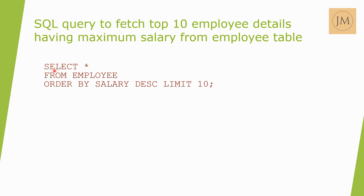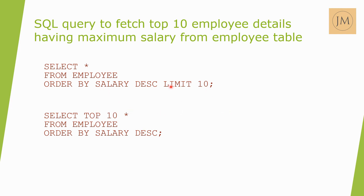We can use: SELECT * FROM employee ORDER BY salary DESC LIMIT 10. Ordering by salary descending puts the maximum salary on top, and LIMIT 10 restricts to the first 10 records — giving the top 10 employees with maximum salary. Alternatively, we can use SELECT TOP 10 * FROM employee ORDER BY salary DESC.